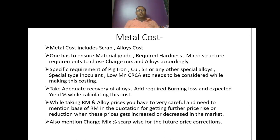Metal cost includes scrap cost and alloy cost. One has to ensure the material grade, required hardness, and microstructure requirements to choose charge mix and alloy accordingly. Specific requirements of pig iron, copper, tin, or any other special alloy have to be considered. Special types of inoculant, low manganese, CRC, etc. need to be considered while making this costing. Take adequate recovery of alloys and add required burning loss and expected yield percentage while calculating these costs.